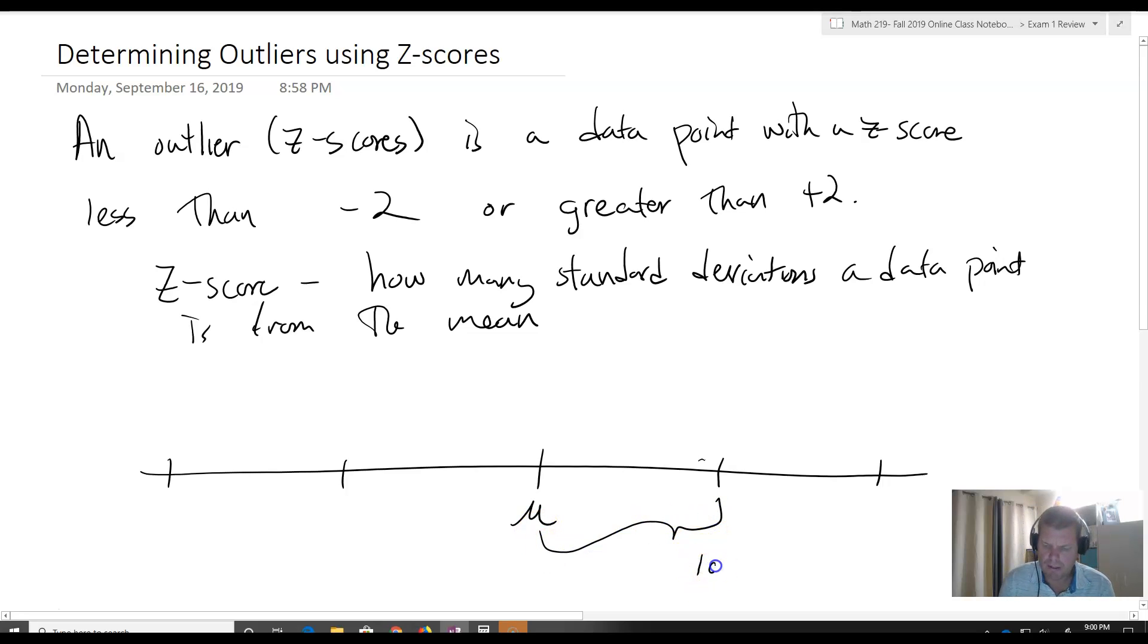This might be one standard deviation, one sigma, and this might be two sigma. This will be negative one sigma, negative two sigma. The farther away that we are from the mean, the rarer the element supposedly gets.